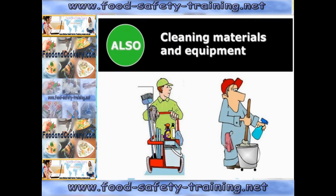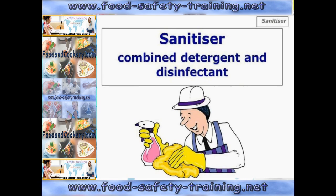You also need to disinfect all your cleaning materials and equipment. You might also use a sanitiser in your workplace — a combined detergent and disinfectant. It's very food safe, non-toxic, has no taste, and is very cost effective. You can buy 5 litres of concentrated sanitiser for about 10 pounds, diluted 1 in 50 to 1 in 100 parts water, giving you about 500 litres of diluted product.